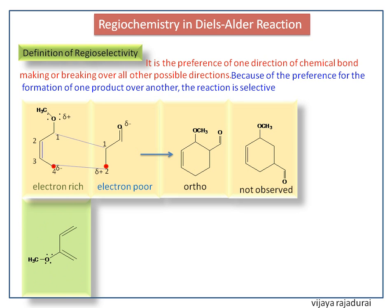If the electron donating group is present on the third carbon atom of the diene, the adjacent carbon atom — that is, the fourth carbon atom — will get more electron density. If the electron donating group is present on the second carbon atom, the first carbon atom will get more electron density.